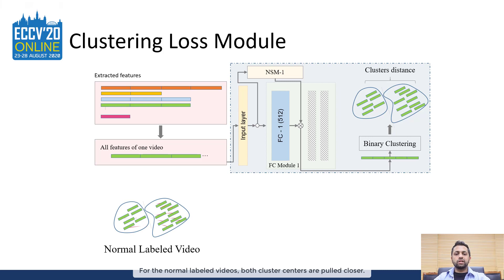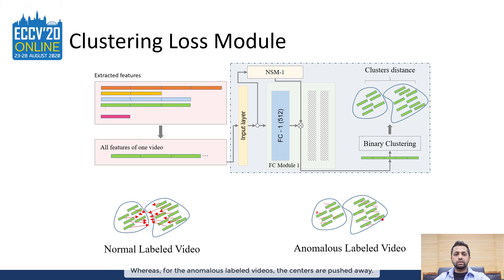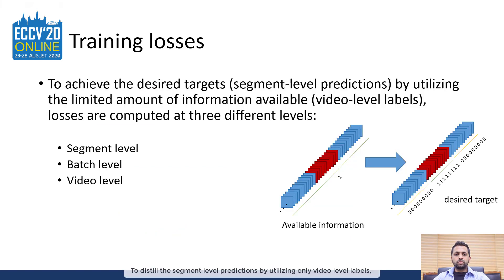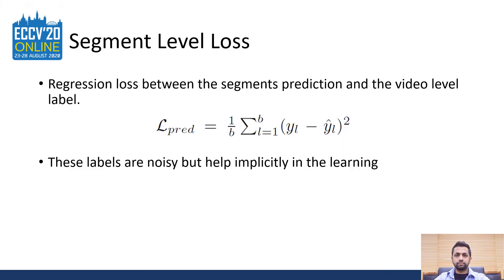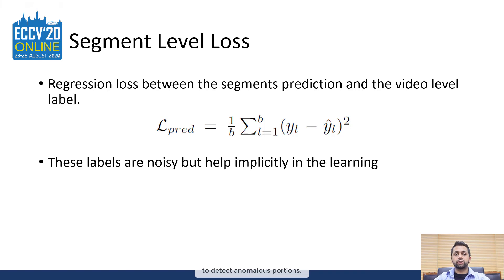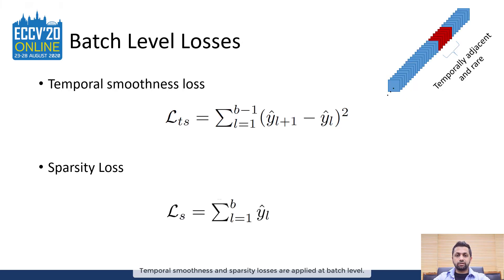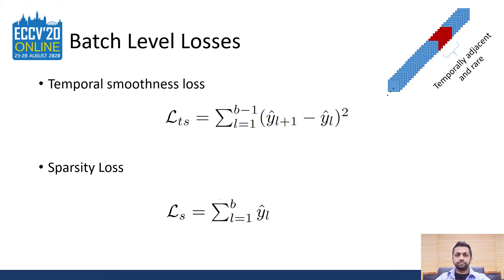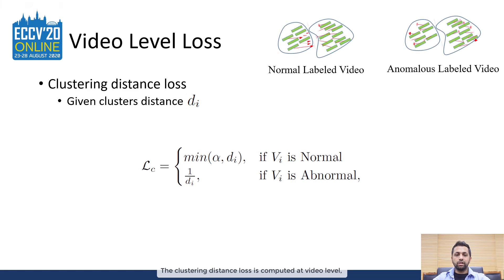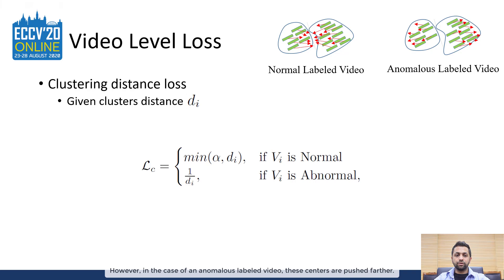For normal labeled videos, both cluster centers are pulled closer, whereas for anomalous labeled videos, the centers are pushed away. To distill segment-level predictions using only video-level labels, the training is carried out using losses at three different levels. At the segment level, a regression loss between individual predictions of segments is computed using video-level labels. Although noisy, this loss can somewhat help towards the implicit learning to detect anomalous portions. Temporal smoothness and sparsity losses are applied at the batch level. The intuition behind temporal smoothness loss is that anomalous events are usually temporally adjacent, whereas the sparsity loss reflects the fact that anomalous events are overall rare. The clustering distance loss is computed at the video level, where centers of the two clusters for a normal labeled video are pulled closer, but in the case of an anomalous labeled video, these centers are pushed farther.